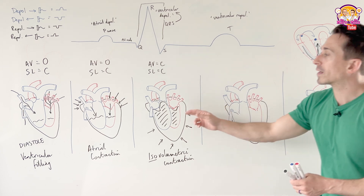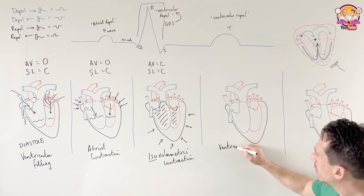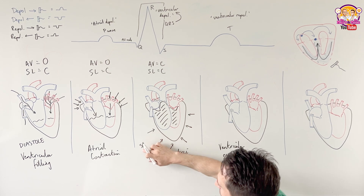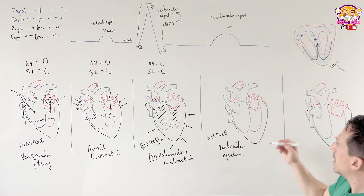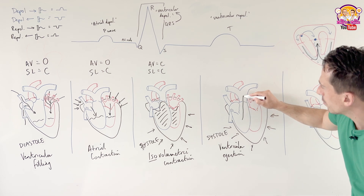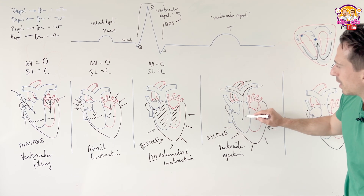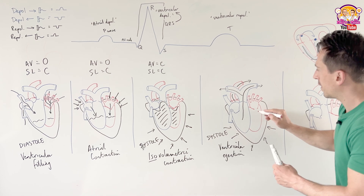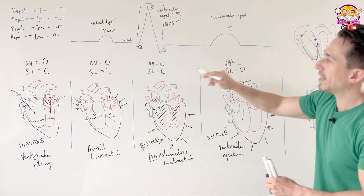Next we overcome that point and have ventricular ejection, which is also a systolic phase. The ventricles contract very hard, and the blood moves up and out through the semilunar valves to go either to the lungs or to the rest of the body. The AV valves remain closed, but the semilunar valves are now open.